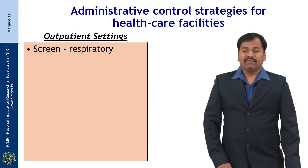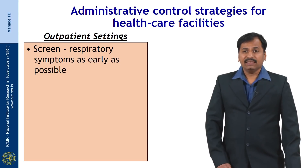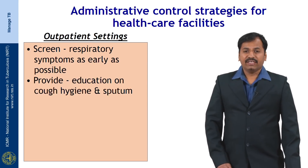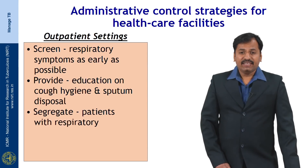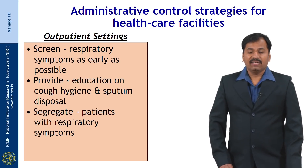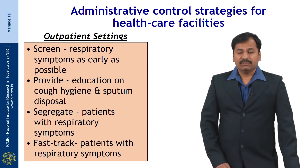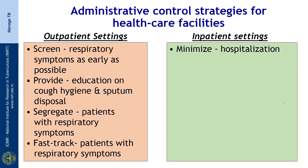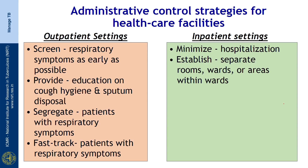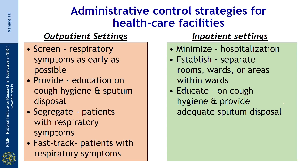In outpatient settings, the first step is to screen for respiratory symptoms as early as possible, provide education on cough hygiene and sputum disposal at the point of care, and segregate patients with respiratory symptoms as soon as possible, fast-tracking them for early diagnosis. In inpatient settings, minimize hospitalization as far as possible, establish separate rooms, wards, or areas within wards for highly infectious diseases, and educate patients in wards on cough hygiene while providing adequate sputum disposal facilities.